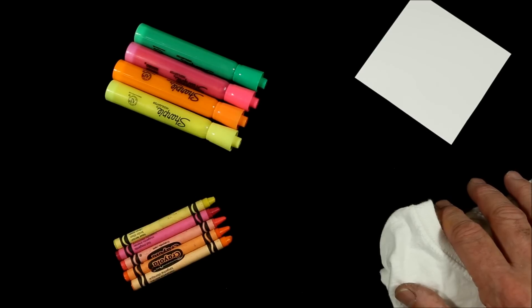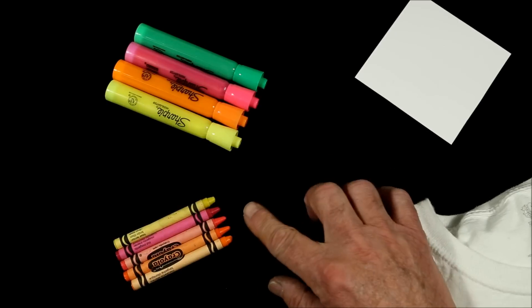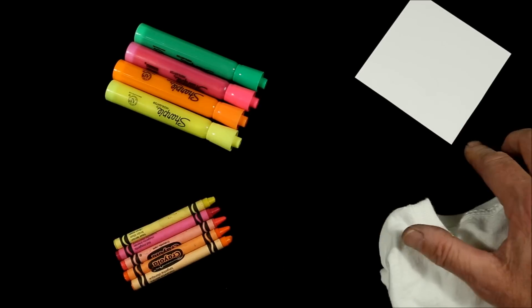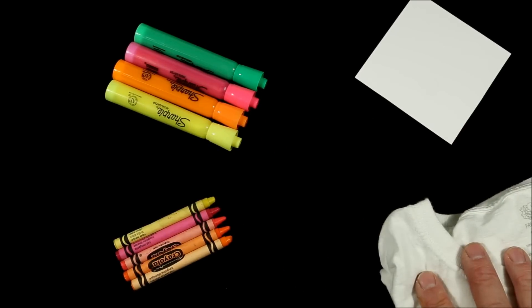You may be surprised to hear that many very common items such as crayons, markers, paper, even t-shirts, are impregnated with special dyes which, if you expose them to ultraviolet radiation, look like this.